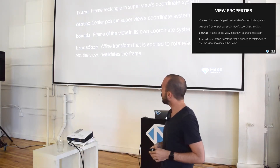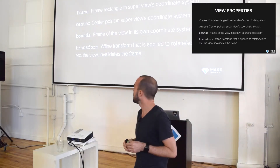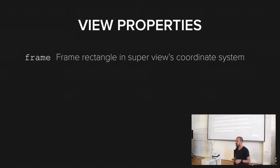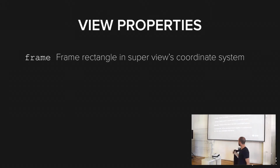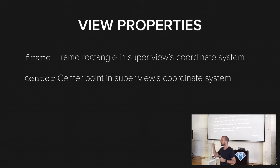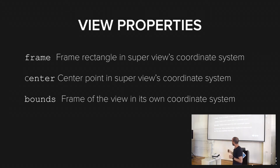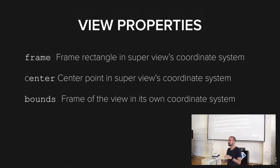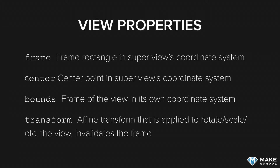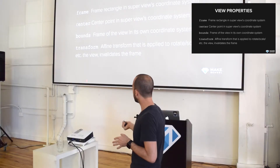Some important view properties that you should know about — you've probably dealt with them throughout the Summer Academy content. The first one is the frame of a view, which is just the rectangle, the size, and the position of the rectangle in the parent's view. The center is the center of that current view in the parent's view. The bounds is very similar to the frame, but it's expressed in the coordinate system of the view itself, not in the parent's view — it has the same size as the frame, but its position is always at 0, 0. You can also have a transform on a view, which allows you to rotate, scale, or translate views — often used in combination with animations.